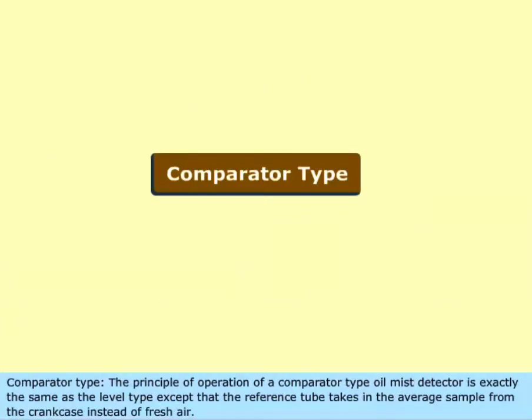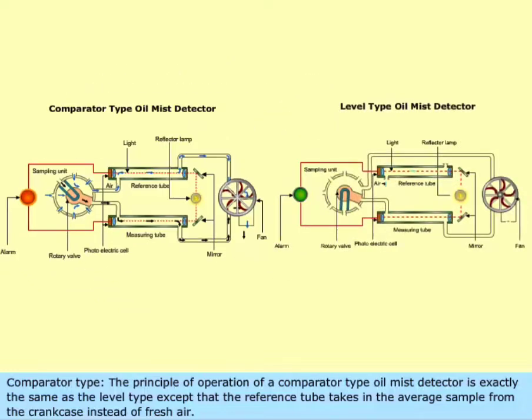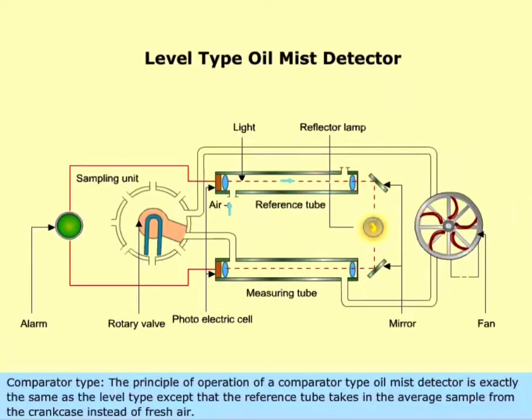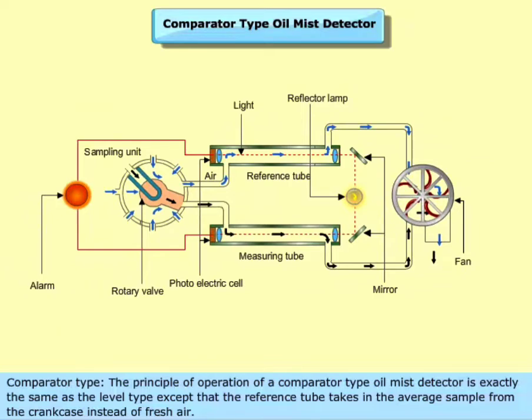Comparator Type. The principle of operation of a comparator type oil mist detector is exactly the same as the level type, except that the reference tube takes in the average sample from the crankcase instead of fresh air.